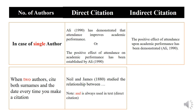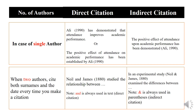When there are two authors, cite both surnames and the date every time you make a citation. For example, 'Neil and James studied the relationship between notes' is always used in text as a direct citation. In an experimental study, 'Neil and James (1880) examined the differences between notes' is always used in parentheses as an indirect citation.